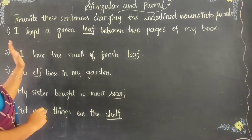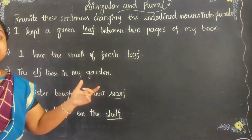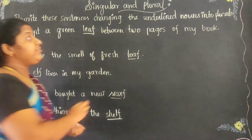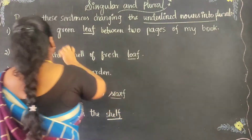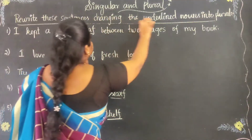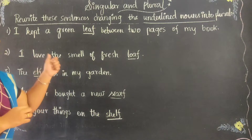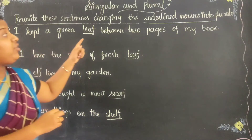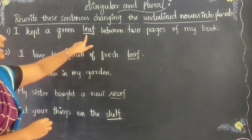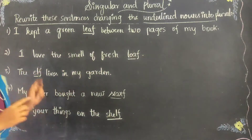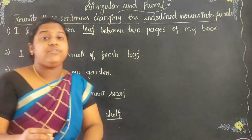We know that there are so many rules to convert singular into plural forms. Now, we are going to rewrite these sentences, changing the underlined nouns into the plural forms. All these underlined words are in singular form, so we are going to convert them into plural form.